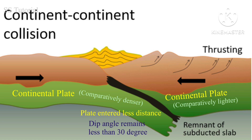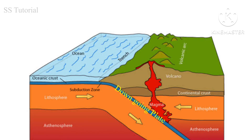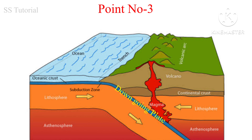But the plate does not go much deeper — subduction does not take place, and the dip angle remains less than 30 degrees. The downgoing slab partially melts due to higher temperatures in the interior of the Earth, and temperature is generated due to the collision of plates.